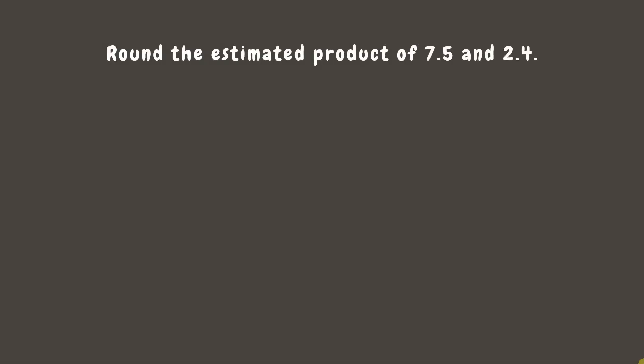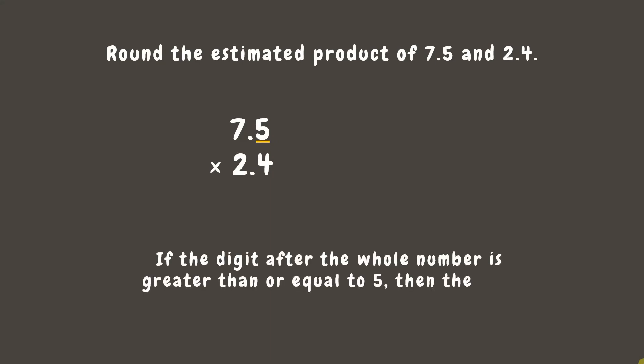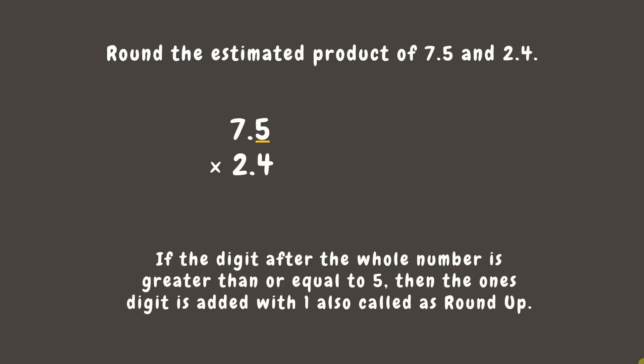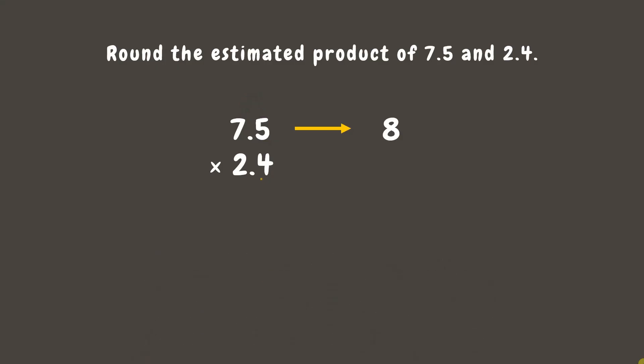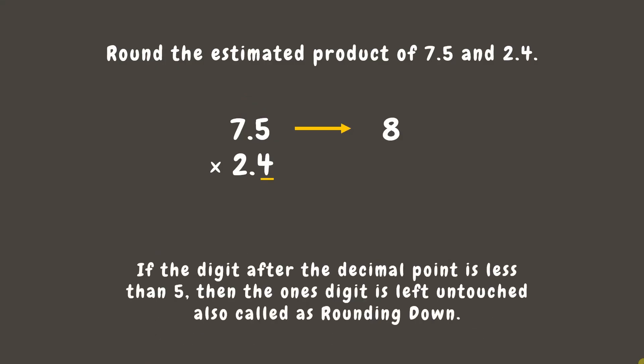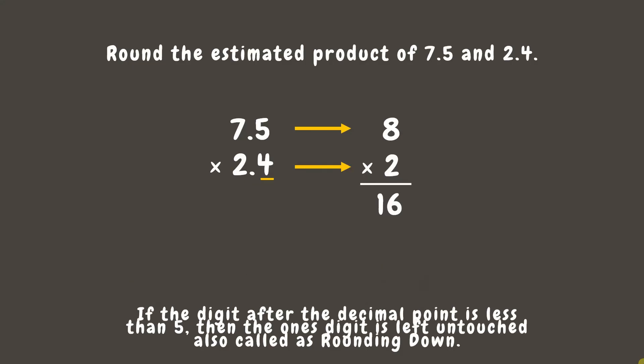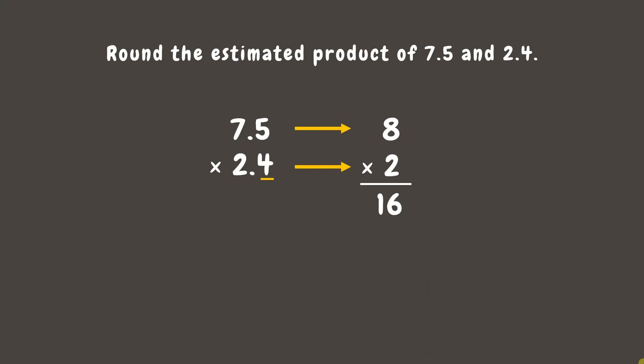Let's go to our last example. Let's find the estimated product of 7.5 and 2.4. For 7.5, since the digit after the decimal point is 5, we need to round up. Let's add 1 to 7, and that is 8. For 2.4, since 4 is less than 5, we need to round down. The whole number will remain the same, so 2.4 rounded off is 2. Now, let's multiply: 8 times 2 is 16. The estimated product is 16.